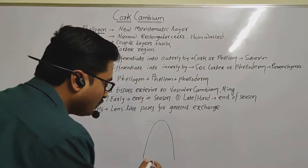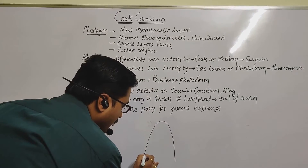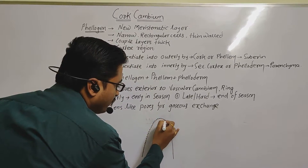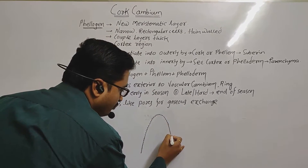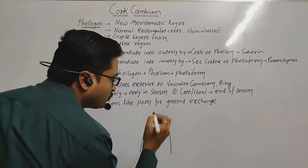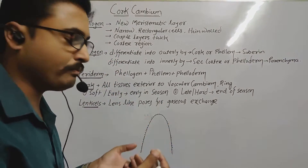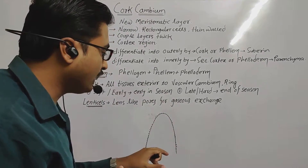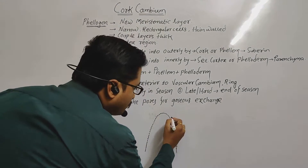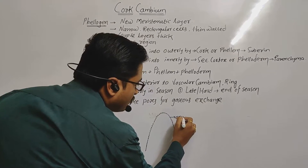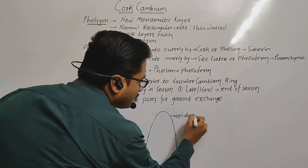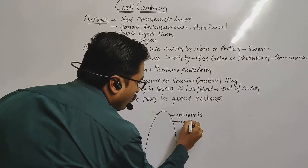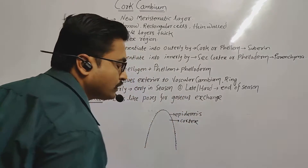The outermost layer of the stem is called epidermis. Epidermis is the outermost layer of the plant stem — it is the surface of the plant stem. Inside the epidermis of a dicot plant, there is cortex present.